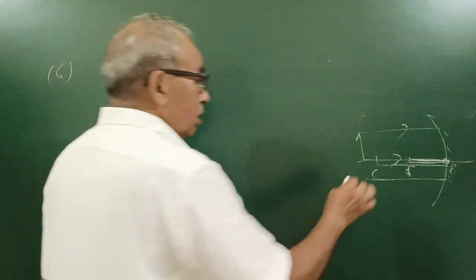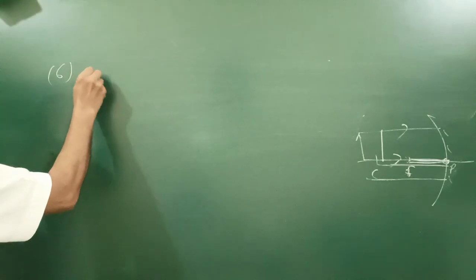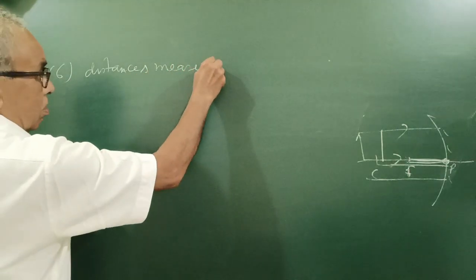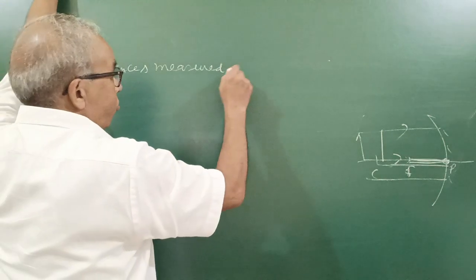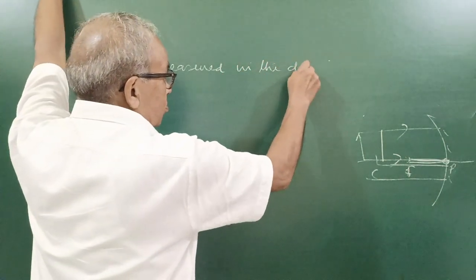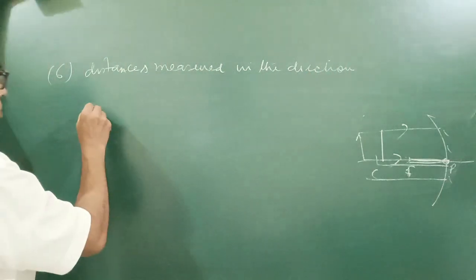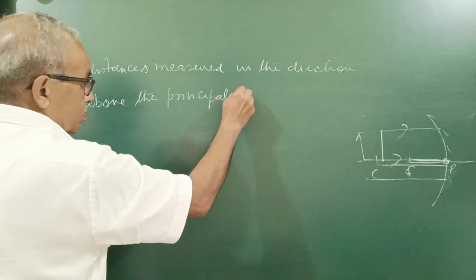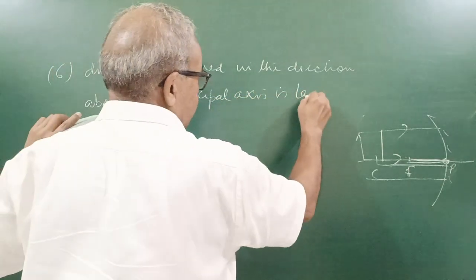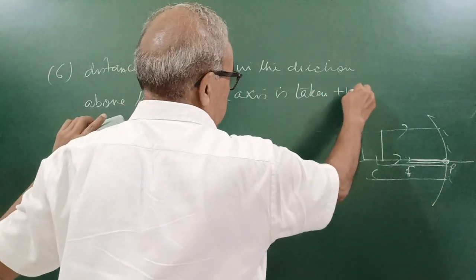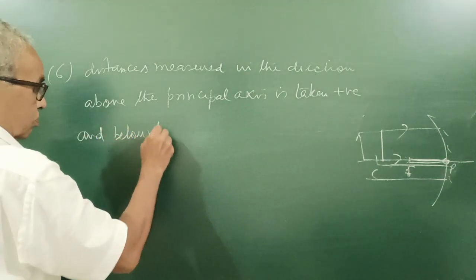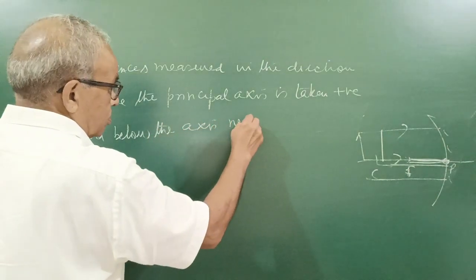Now, number next I think six. Distances measured upward, distances measured in the direction above the principal axis is taken positive, and below the axis is negative.